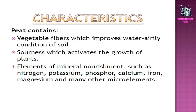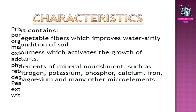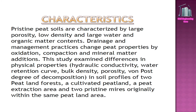Peat contains elements of mineral nourishment such as nitrogen, potassium, phosphorus, calcium, iron, magnesium, and many other micro elements. Pristine peat soils are characterized by large porosity, low density, and large water and organic matter contents. Drainage and management practices change peat properties by oxidation, compaction, and mineral matter additions.